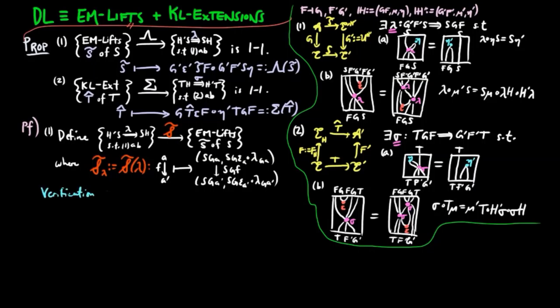To verify Kleis(λ) is a well-defined object of the Eilenberg-Moore category for the monad H', we need to show it respects the unit and multiplication of H'. For the unit, we show that S·G·ε_A · λ_{G,A} · η'_{S,G,A} is equal to the identity on S·G·A.